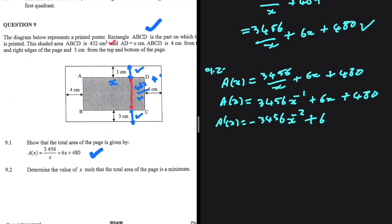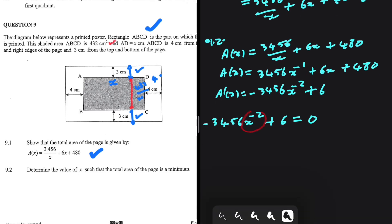Let's equate to 0: -3456x^(-2) + 6 = 0. We can rewrite this as -3456/x² + 6 = 0.